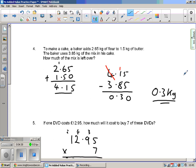On to question four. To make a cake, a baker adds 2.65 kilograms of flour to one and a half kilograms of butter. The baker uses 3.85 kilograms of the mix in the cake. How much of the mix is left over? Right, so he's used this and this. We're going to add this together.